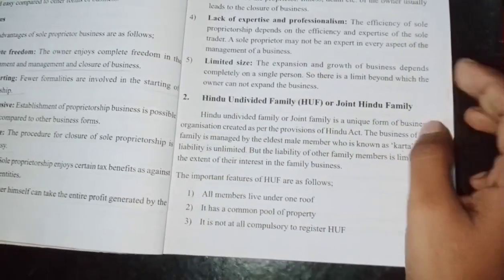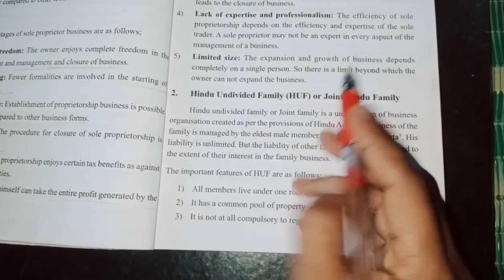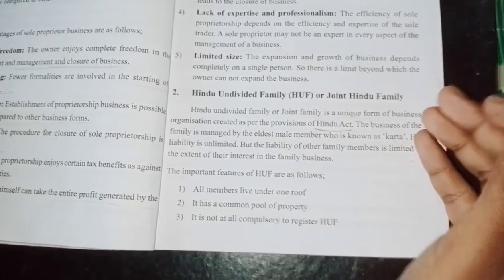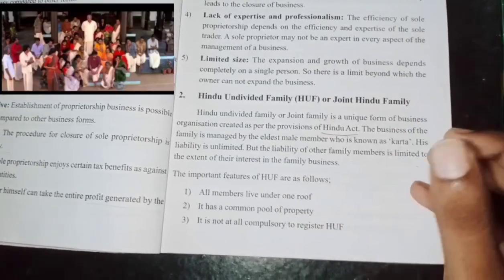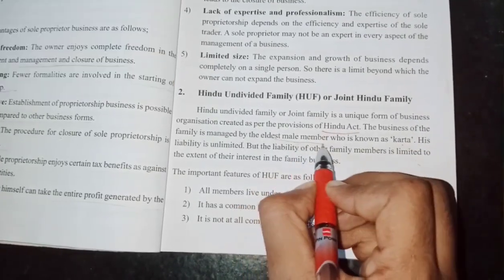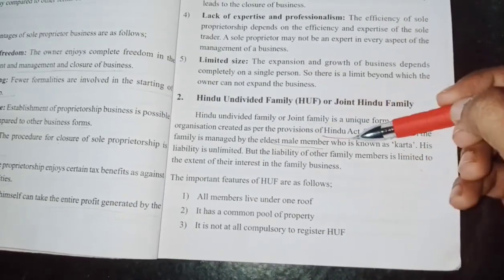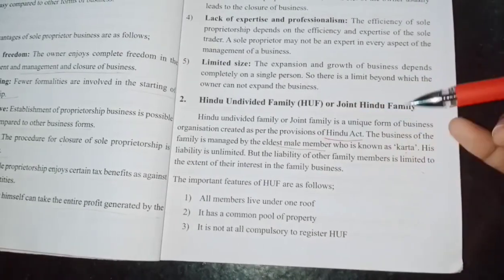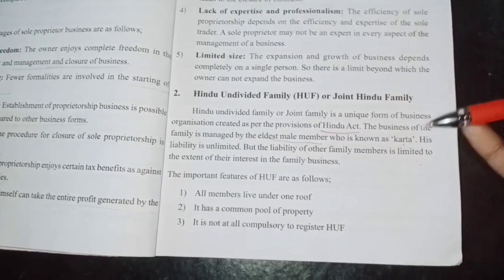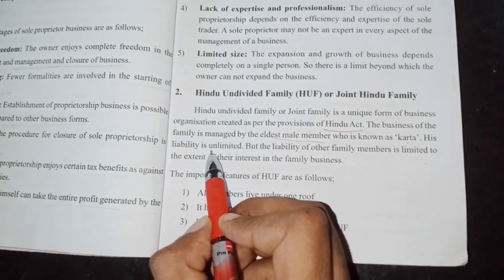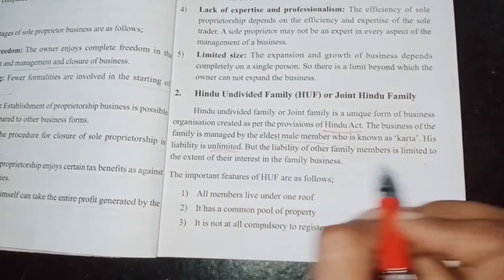Next, we are going to discuss Hindu Undivided Family, or HUF. We have to follow the Hindu Act provisions for the HUF. The family business is managed by family members. The head of the family is called the Karta. The Karta has unlimited liability, while other co-partners have limited liability.